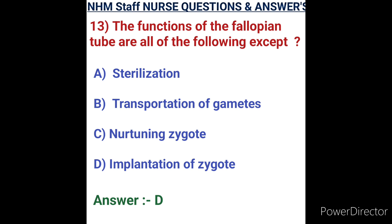Question number thirteen: the functions of the fallopian tube are all of the following except. Options: A) installation, B) transportation of gametes, C) nurturing the zygote, D) implantation of zygote. The main function of the fallopian tube is as a channel for transportation and fertilization of the zygote. Implantation of the zygote does not occur in the fallopian tube. Option D, implantation of zygote, is the correct except answer.